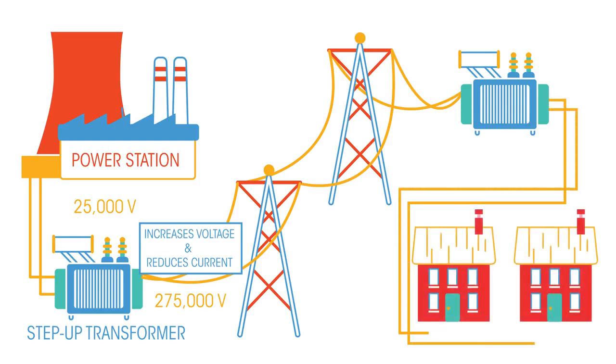Before the electricity gets to our homes, the voltage needs to be reduced back down to a safe level. The electricity therefore passes through a step-down transformer.